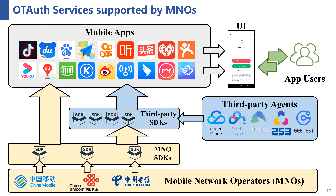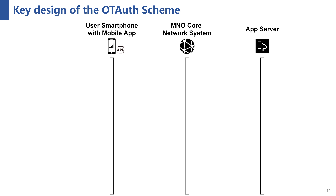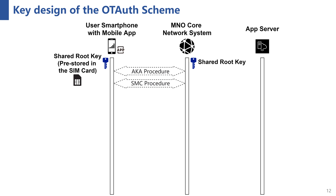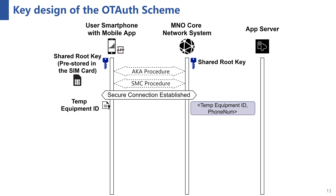Now let's focus on the high-level design of One-Type Authentication services. Before the One-Type Authentication procedure actually starts, the user's smartphone needs to interact with the MNO core network system to perform the AKA procedure and the SMSC procedure. After this, the user's smartphone and the MNO core network system have established a secure connection based on a shared root key. Through this secure connection, the MNO core network system has the capability of recognizing the local phone number whenever it receives a data packet from an end device.